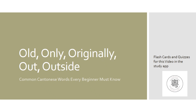Hello everyone, welcome to the Common Cantonese Words Every Beginner Must Know series. In this lesson, I'm going to go over words associated with the Chinese characters for old, only, originally, out, and outside. If you wish to study these words in flashcard or quiz format, please check out our Android app — the link will be in the video description below.